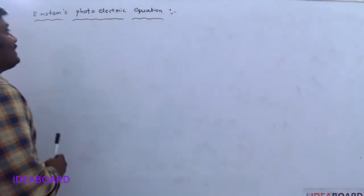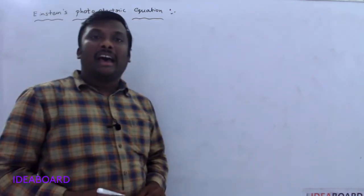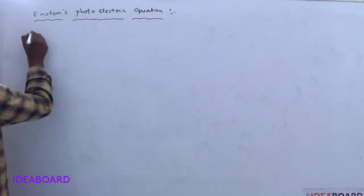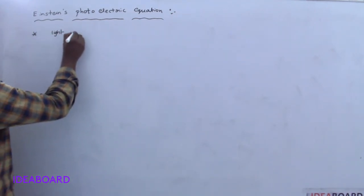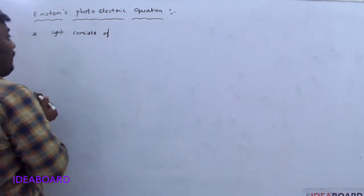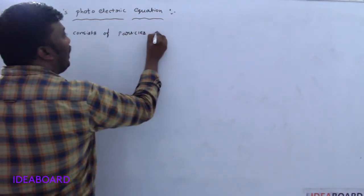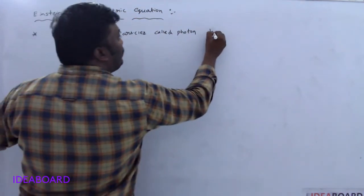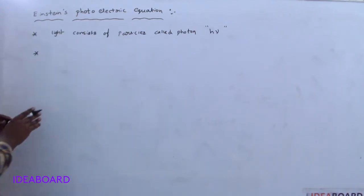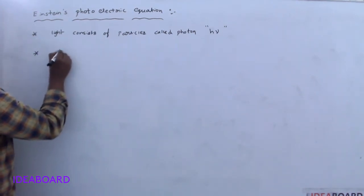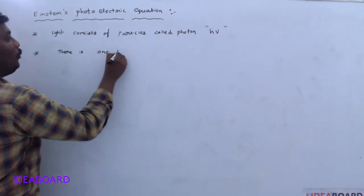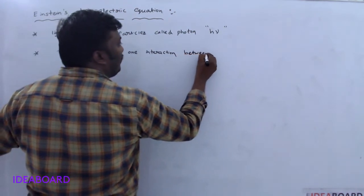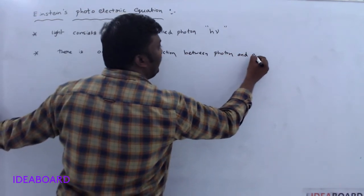Hi students, today we are discussing Einstein's photoelectric equation. Einstein got the Nobel Prize for this photoelectric effect. Einstein assumed that light consists of particles called photons, and every photon has certain energy h·ν. According to Einstein, there is one-to-one interaction between a photon and an emitted electron.